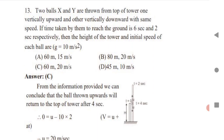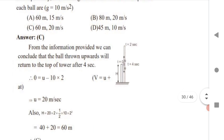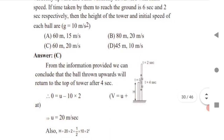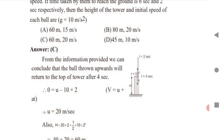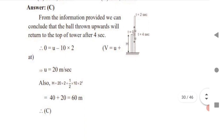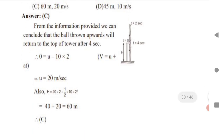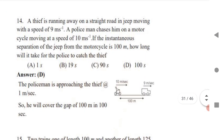Next important question: two balls X and Y are thrown from the top of a tower, X vertically upward and Y vertically downward, both with the same speed. The times taken to reach the ground are 6 seconds and 12 seconds respectively. Find the height of the tower and the initial speed. The ball thrown upward returns to the top of the tower after 4 seconds, giving initial velocity = 20 m/s. Use s = ut + ½at² to find height = 60 meters.